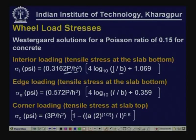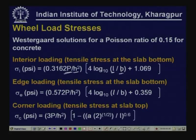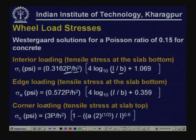This is a function of the load applied, the thickness of the slab, L, and another parameter B. L is a function of E, H, K, and Poisson ratio. Similarly, the edge loading expression is also in terms of wheel load, thickness, L, and B. We also have the expression for corner loading. P is the wheel load in pounds, H is the slab thickness in inches, and A is the radius of wheel contact area assuming circular contact area.